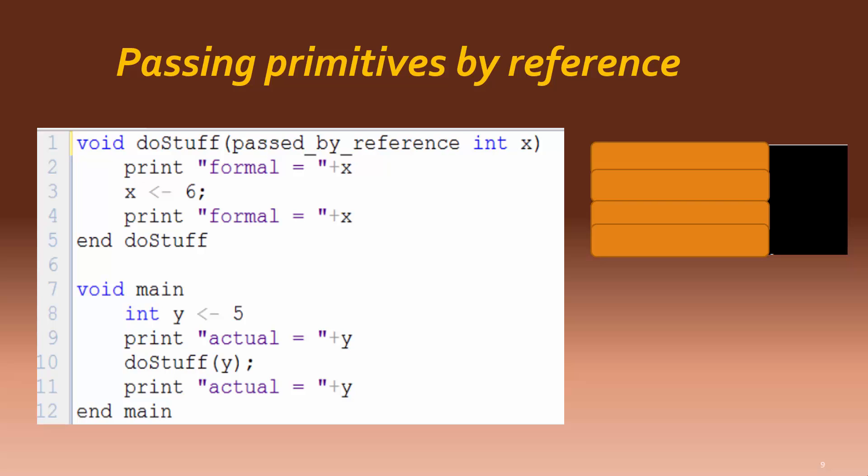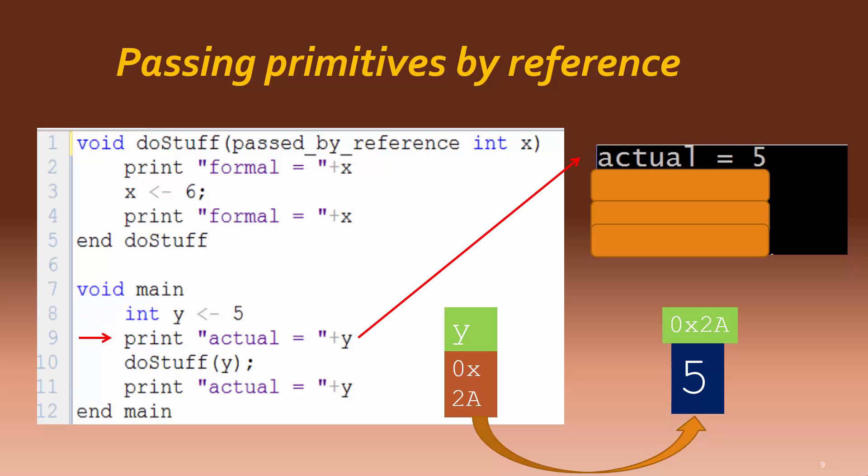Let's watch the action. Again, main starts things off. y is initialized to 5. Notice carefully that y contains a memory address, which is in a different place in memory, and that location actually contains the value 5. The value that y is pointing to is then printed, and then the doStuff method is called.